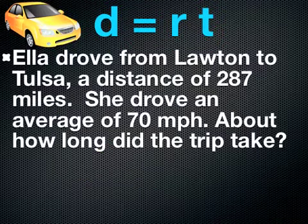The next example says Ella drove from Lawton to Tulsa a distance of 287 miles. She drove an average of 70 miles per hour. About how long did the trip take? Notice here I am given the distance that she drove, which was 287 miles. And then it tells me that she drove it at an average speed of 70 miles per hour. Anytime we're seeing miles per hour, we know that that is the rate.